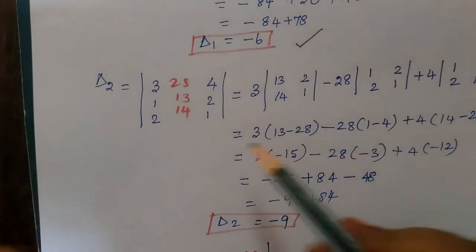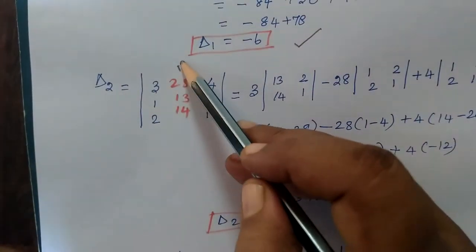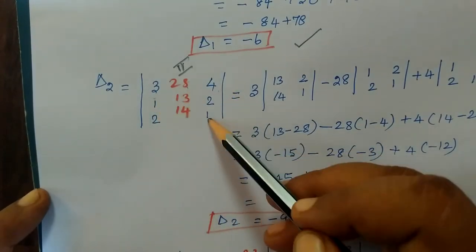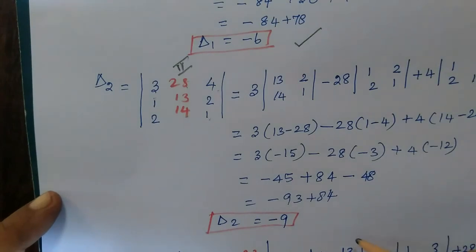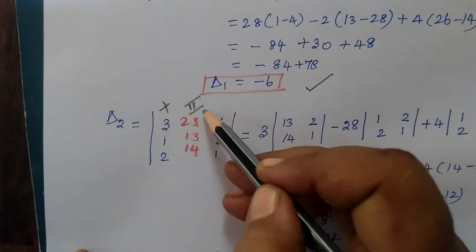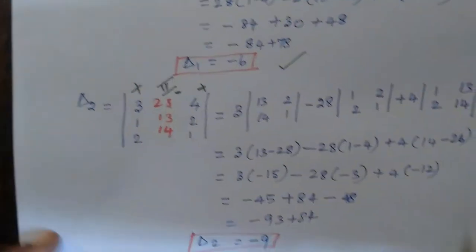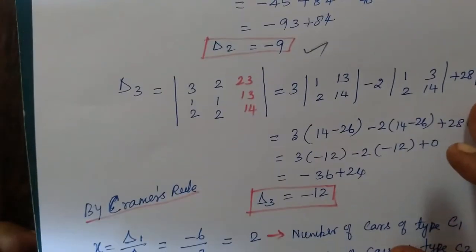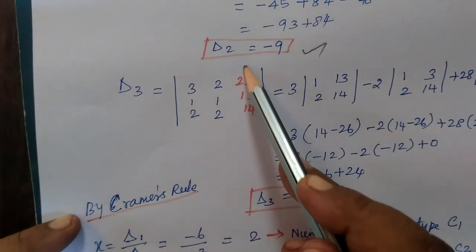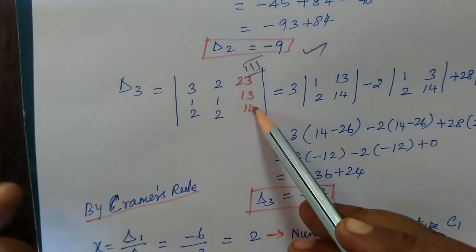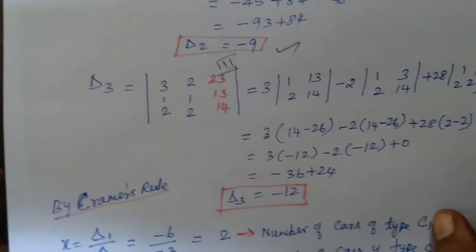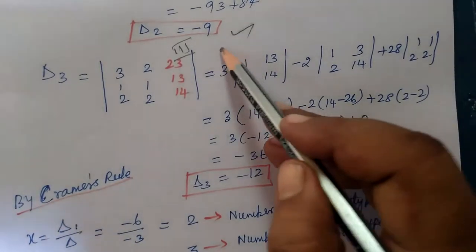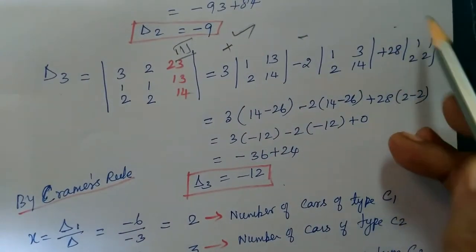Now coming to delta 2, the second column is replaced with the constant values, so this is the usual step. Similarly, for delta 3, delta 3 is the third column replaced, and the constant value gives the result. So delta 3 equals minus 12.